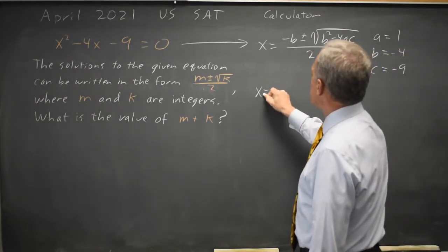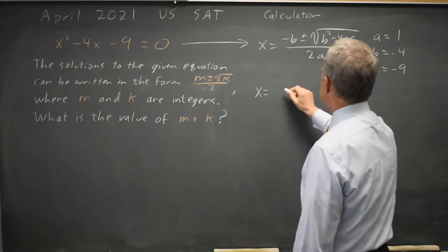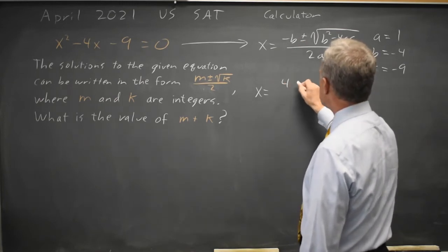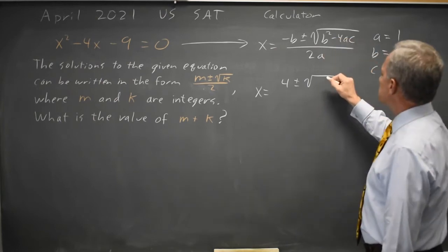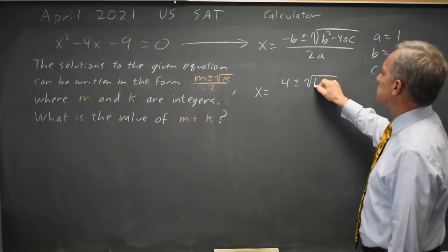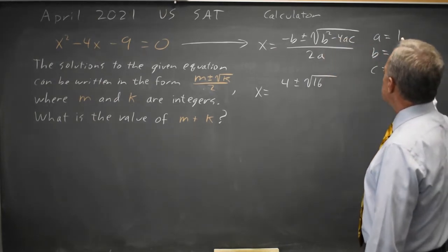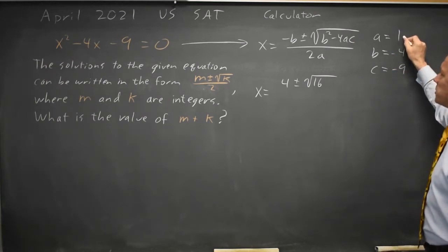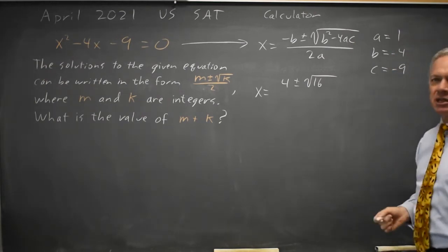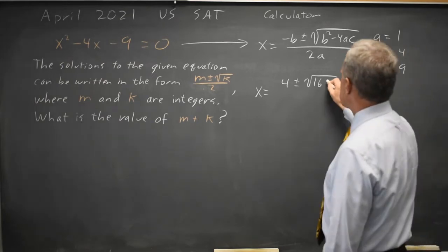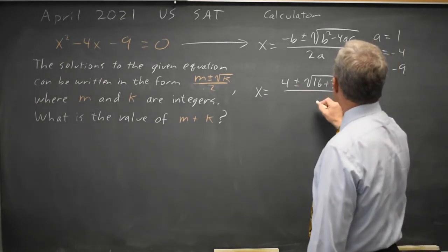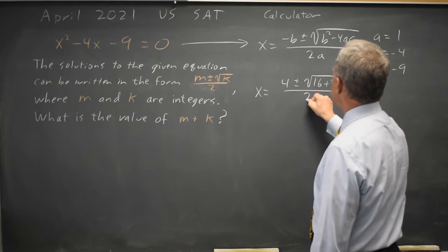So x equals negative b, minus negative 4 is positive 4, plus or minus the square root b squared, negative 4 squared is 16, negative 4ac is negative 4 times 1 is still negative 4, times negative 9 is positive 36, and 2a is twice 1 is 2.